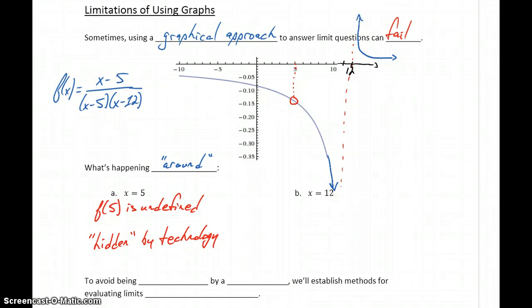So in this case, f(12) is also undefined. In this case, because we would have a vertical asymptote for the graph.